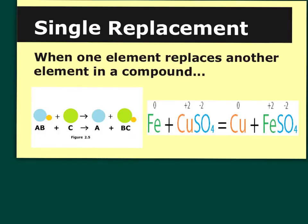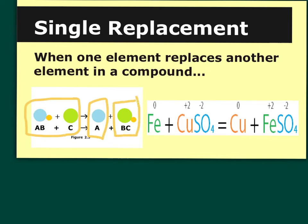The first chemical reaction type we're going to talk about are single replacement reactions. This is when one element replaces another element in a compound. Using our ABC unknown elements: our reactants are AB and C. When these react together in a single replacement reaction, they yield A and BC.